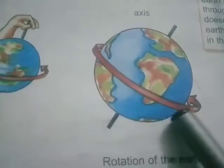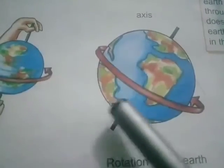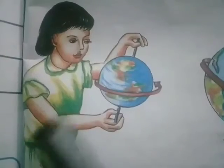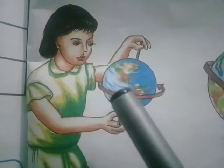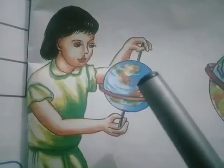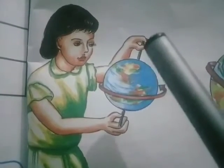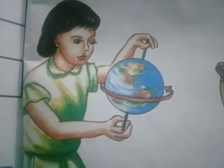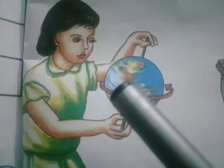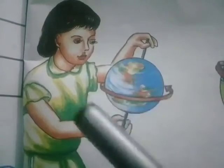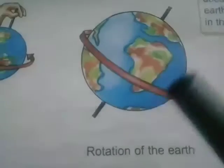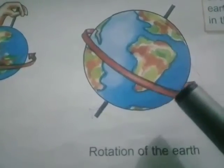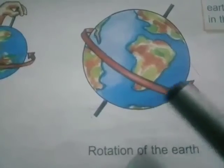The spinning movement of the earth on its axis is called rotation. We understood this with the help of an experiment. If we take a ball and put a knitting needle through its center, you can see in this picture we can spin the ball around the needle. In the same way, the earth spins around a line through its center. This is called rotation.